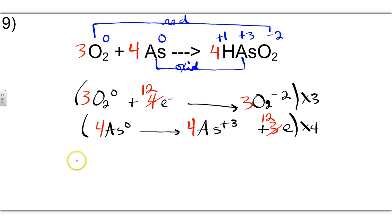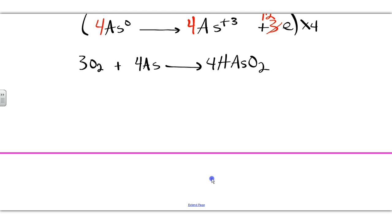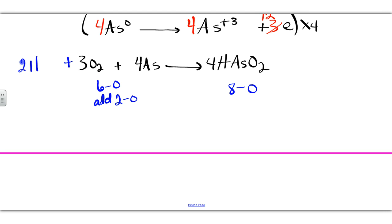Now we'll rewrite our reaction and balance the oxygens and hydrogens. On the left side we have 6 oxygens, and on the right side we have 4 and 2 is 8 oxygens. The masses of everything other than hydrogen and oxygen are already balanced. So I need to add 2 more oxygens on the left side — we'll add 2 waters to balance the oxygen. Now balancing the hydrogens: on the left side we have 2 times 2 is 4 hydrogens, and on the right side we have 4 hydrogens. Since they're already balanced, this is completed.